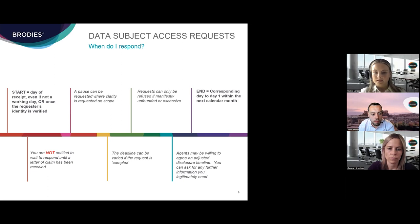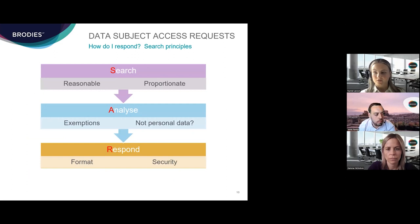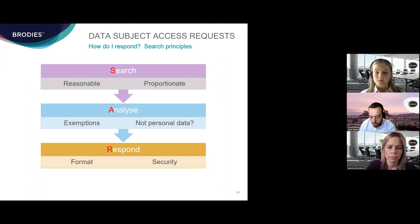Moving on to the main takeaways from this part on DSARs: firstly, make sure that full searches are conducted on all systems where personal data relating to the requester may be held. Searches should be reasonable and proportionate, but the ICO places high importance on the right of access, so the burden would be on you to prove any search is unreasonable. Secondly, the information returned needs to be analysed — only personal data relating to the requester needs to be disclosed. Think about exemptions, but remember that if something is requested but not disclosable under a DSAR, it may be disclosable later under a court process.